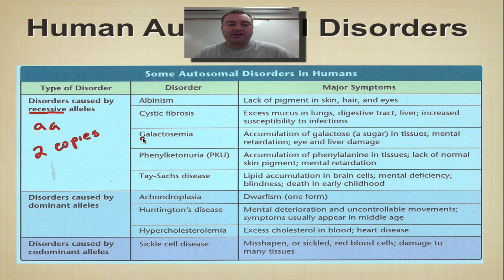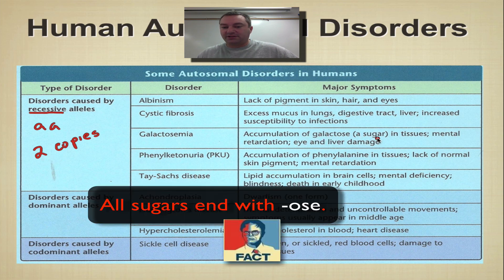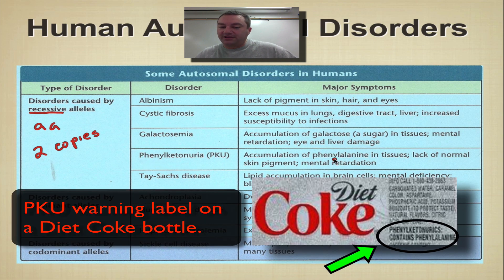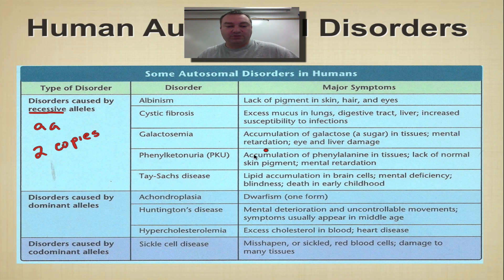Galactosemia is an accumulation of galactose, which is a type of sugar, and this can lead to eye and liver damage and some mental retardation because it affects your brain chemistry. PKU, which we talked about on the last series, involves accumulation of phenylalanine in your tissue. Your skin pigment is not normal, but the worst part is mental retardation. If you keep phenylalanine out of your diet, these people come out to be absolutely positively normal.